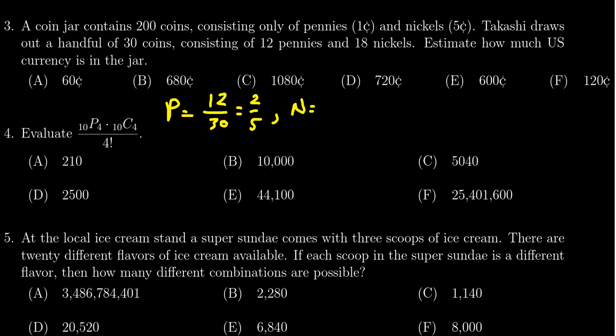Nickels, on the other hand, by this estimate we have 18 over 30. Again, these numbers are both divisible by six, so you get three-fifths. You see that about 40% of the sample was pennies and 60% of the sample was nickels. If that is a representative proportion, then we can extrapolate that proportion onto the whole population.